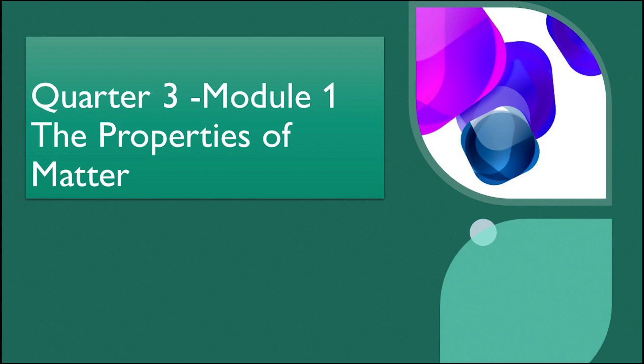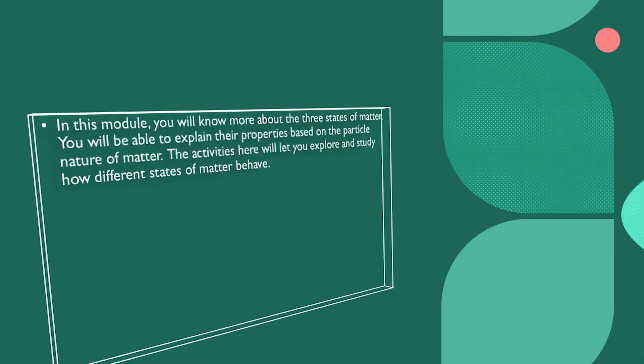We'll discuss Quarter 3, Module 1: the properties of matter. In this module, you will know more about the three states of matter. You'll be able to explain their properties based on the particle nature of matter. The activities here will let you explore and study how different states of matter behave.